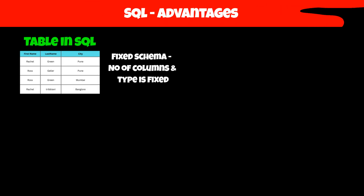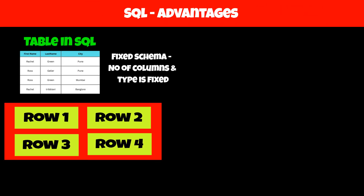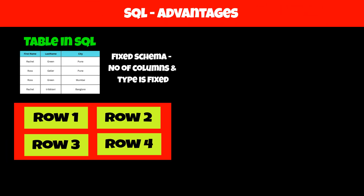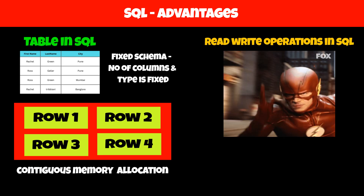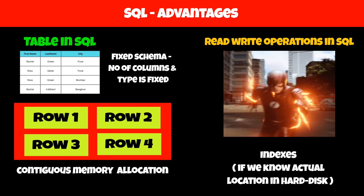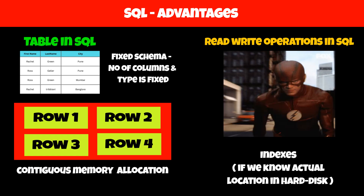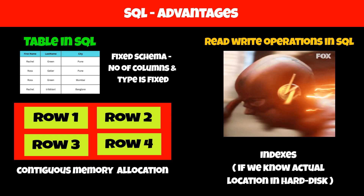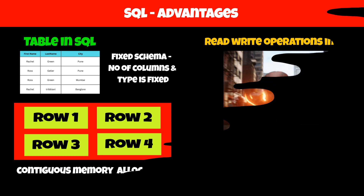The schema — meaning the number of columns and their types — in a SQL database is fixed. Because of this, each row requires constant space for storing data, which allows us to store data in contiguous locations on the hard disk. Since we know how and where data is stored, we can perform reading and writing operations faster. We can also use indexes if we know the actual address of rows on the hard disk. So, the first advantage of SQL is that reading and writing operations become faster.